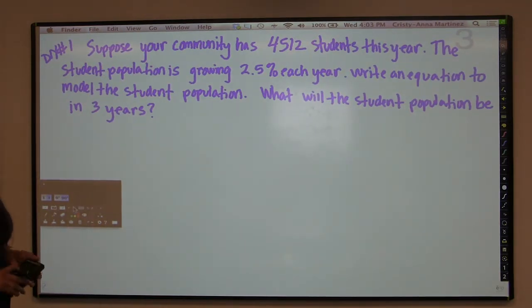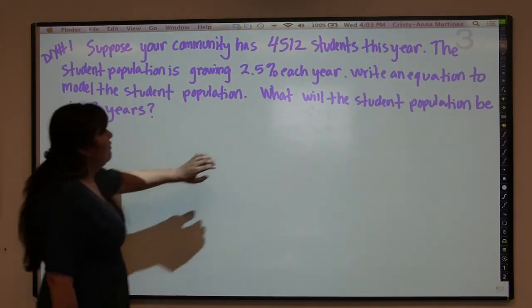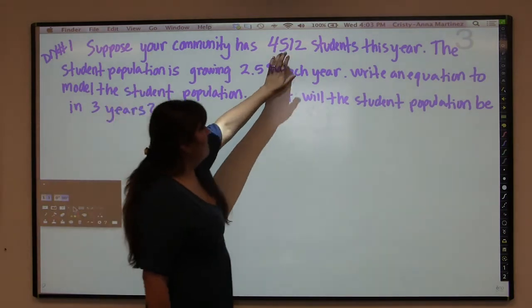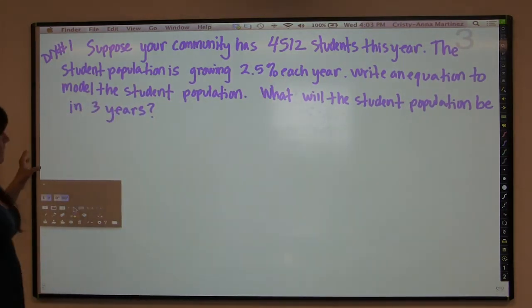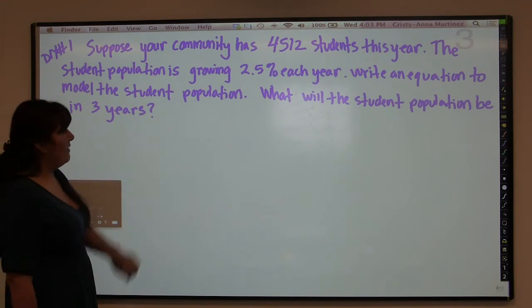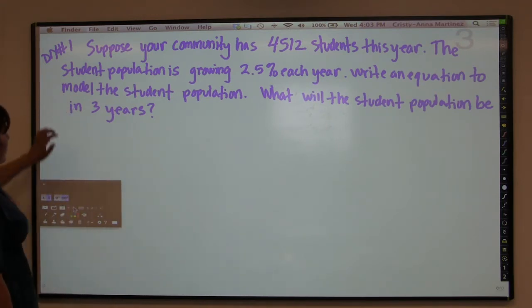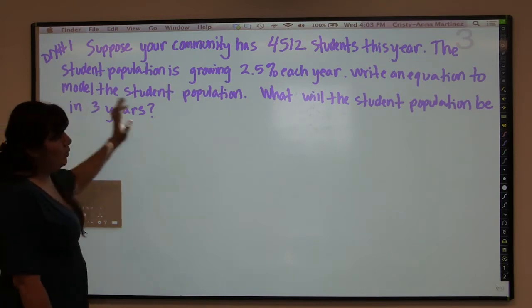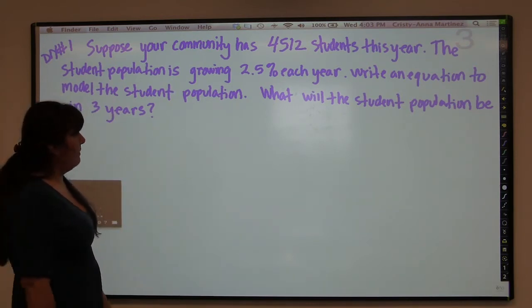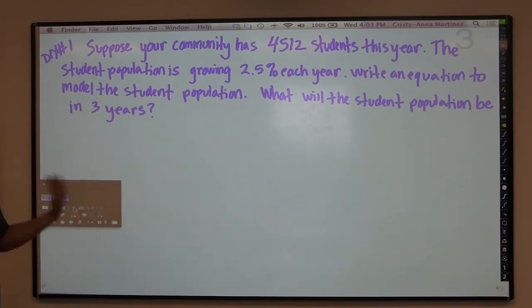Here's an example for you to try. Your community has 4,512 students this year, and the student population is growing 2.5% each year. Write an equation to model the student population, and then predict what the student population will be in three years.